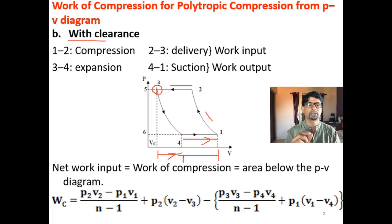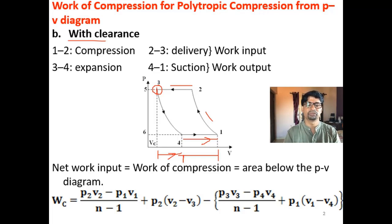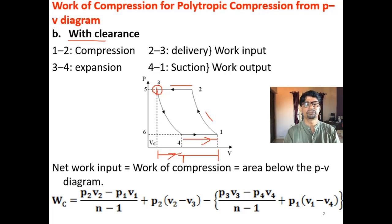Initially, the small amount of compressed air left in the clearance volume expands from 3 to 4. The actual suction begins from 4 to 1. Now, the net work input — that is, the work of compression — is nothing but the area under the PV diagram.